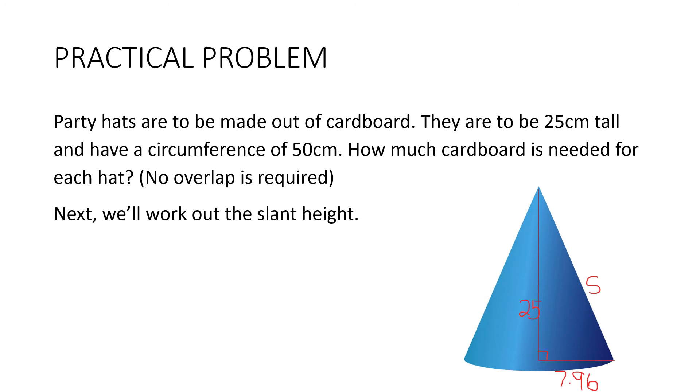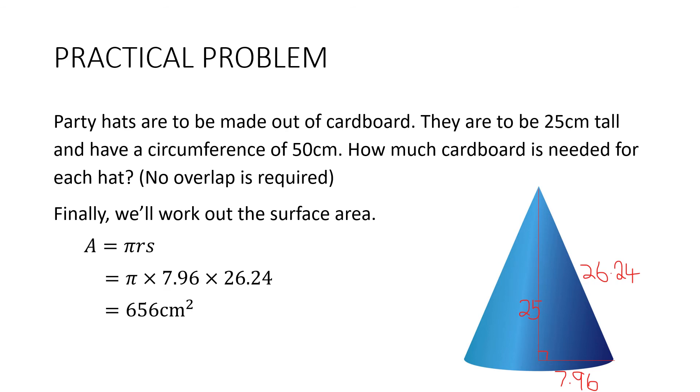Now we'll work out the slant height using Pythagoras' theorem. s² is equal to 25² plus 7.96², which gives us 688.36 to the square root. And our slant height is 26.24 centimetres. And then finally, we'll work out the surface area. We only need the curved surface. We don't need the bottom circle. So we only need the πrs part. Substituting in the numbers, we get 656 centimetres squared.